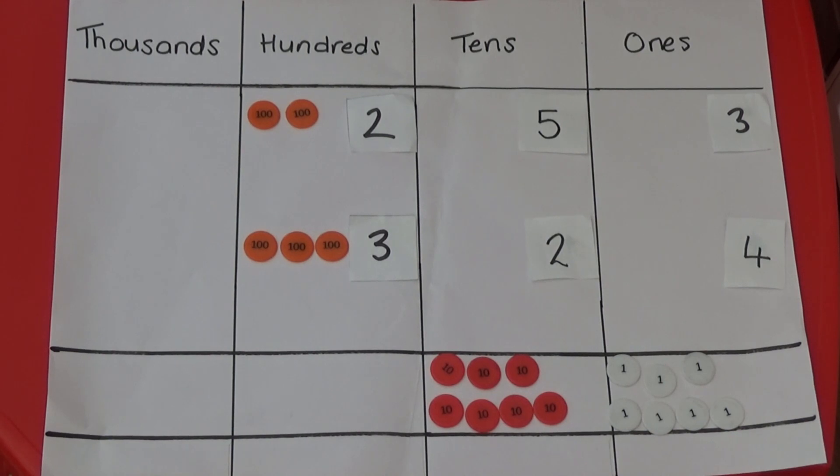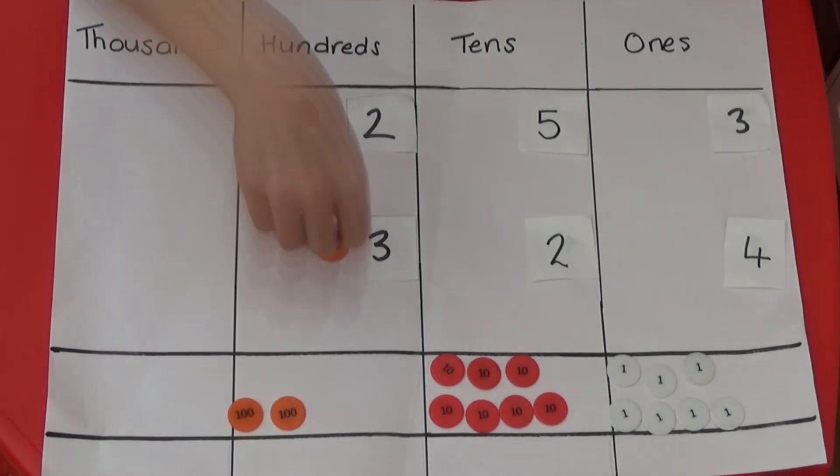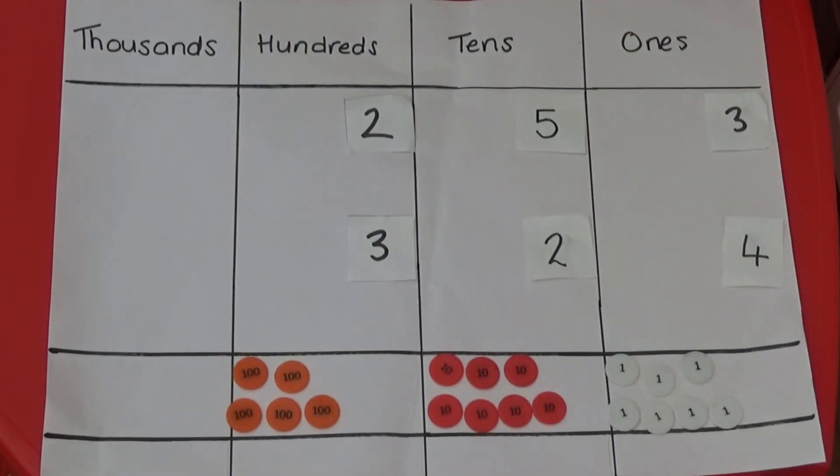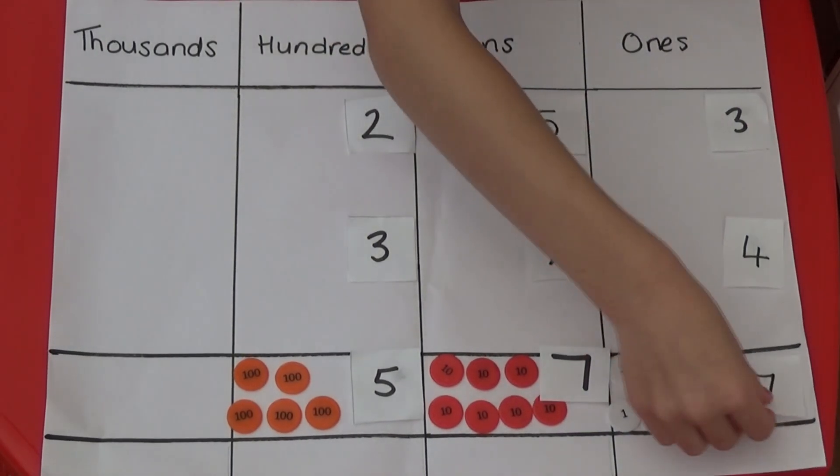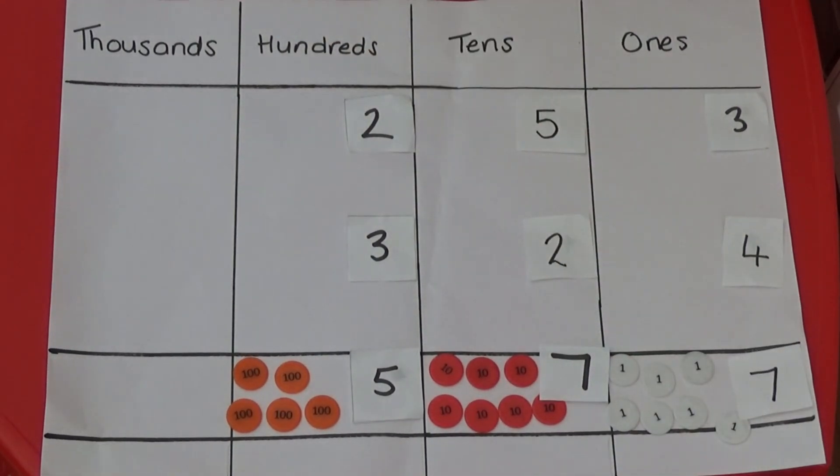Finally I'm going to add together the 2 and the 300s. So this gives me 577. So 253 add 324 equals 577.